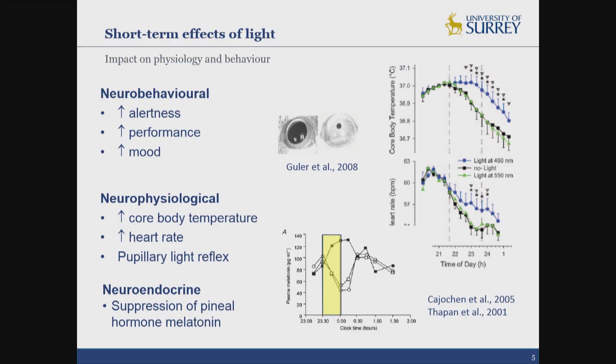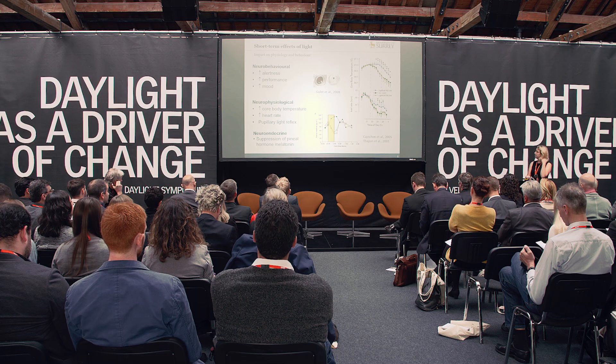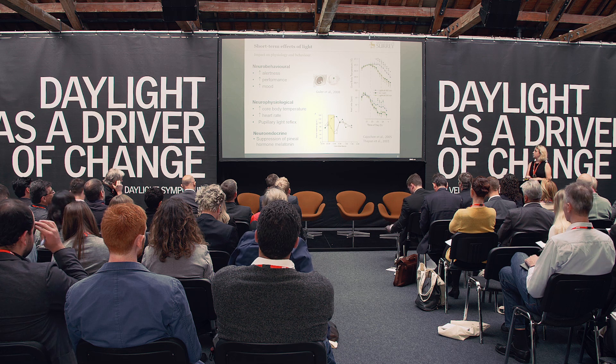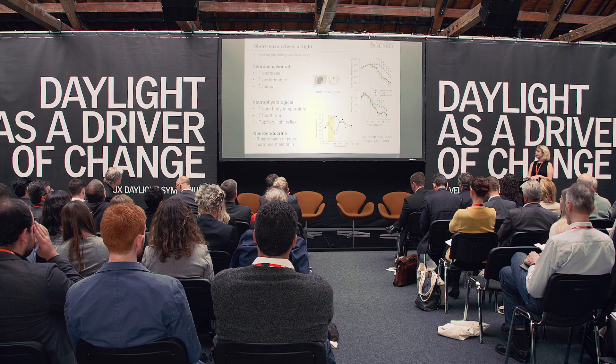Light also has a number of physiological effects. I've shown two graphs here where you can see our core body temperature rhythm and our heart rate. Both of these parameters actually drop at night, so they're at their minimum overnight. And if we're exposed to light — you can see the blue lines where people are exposed to blue light — light is actually capable of sustaining our core body temperature, keeping it elevated, and also the same for heart rate.